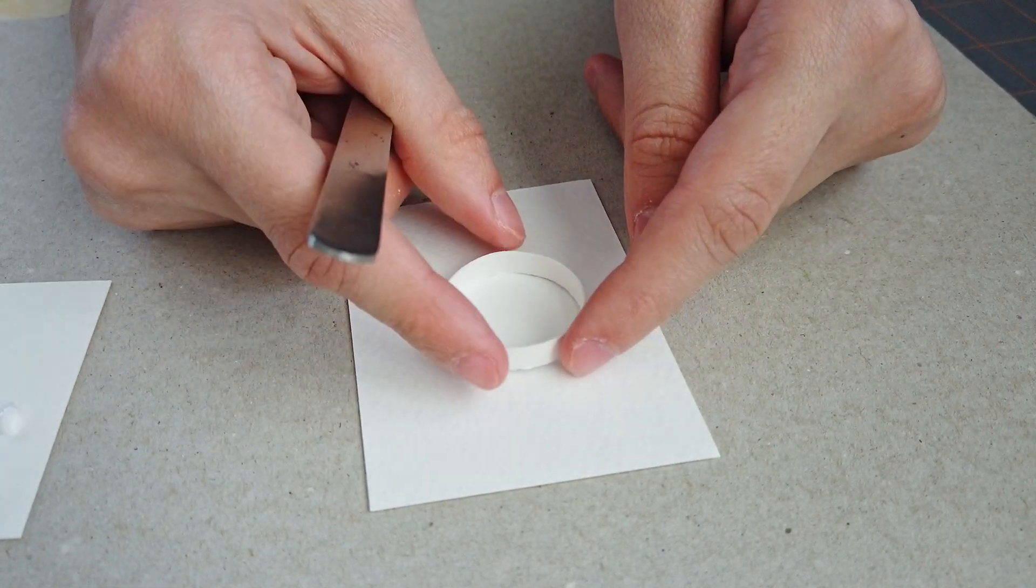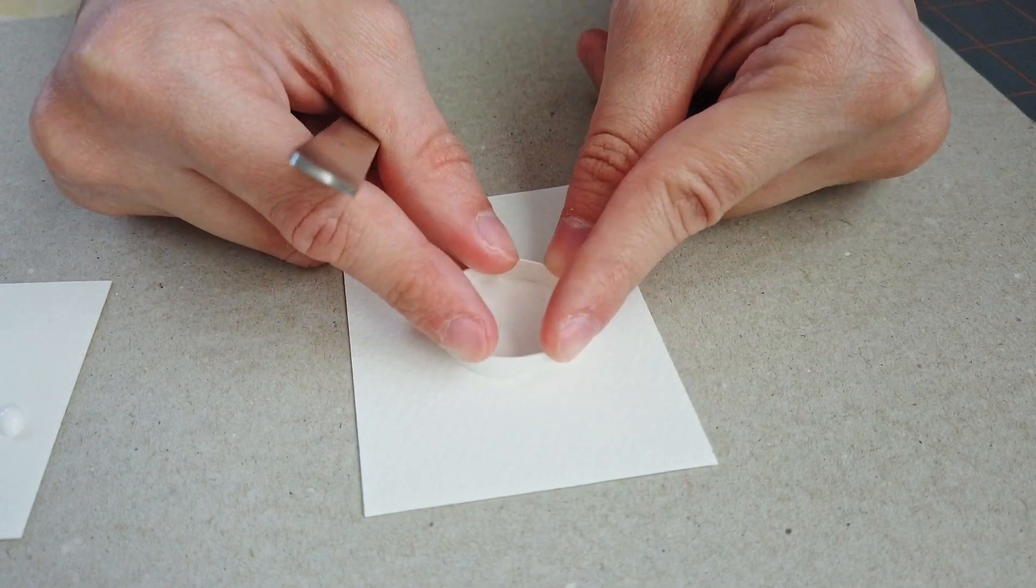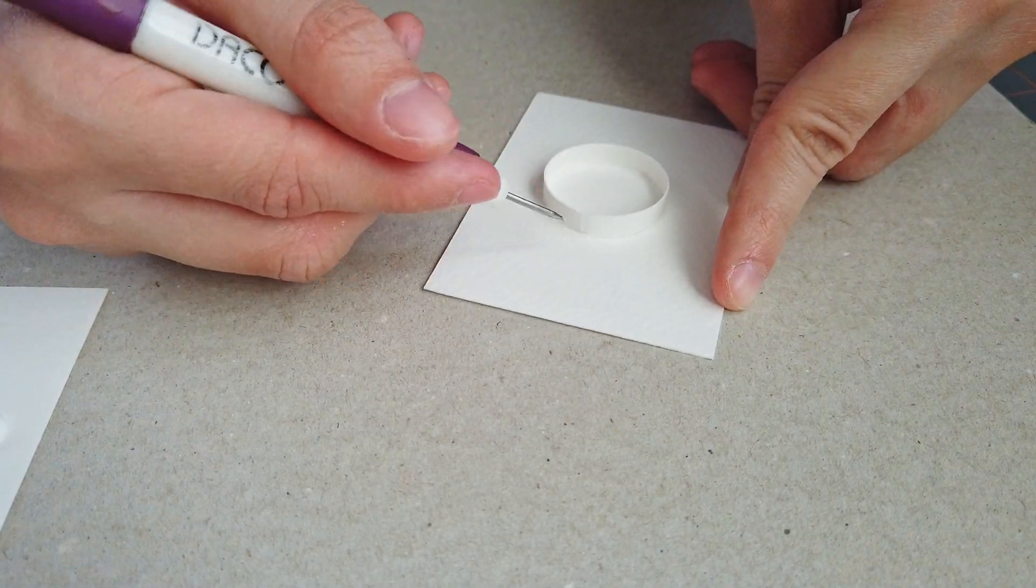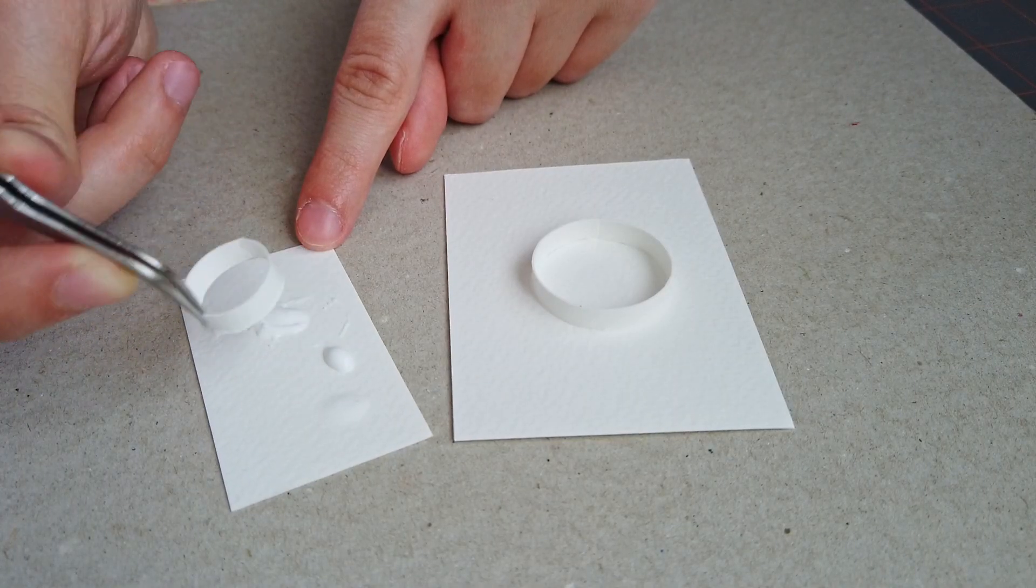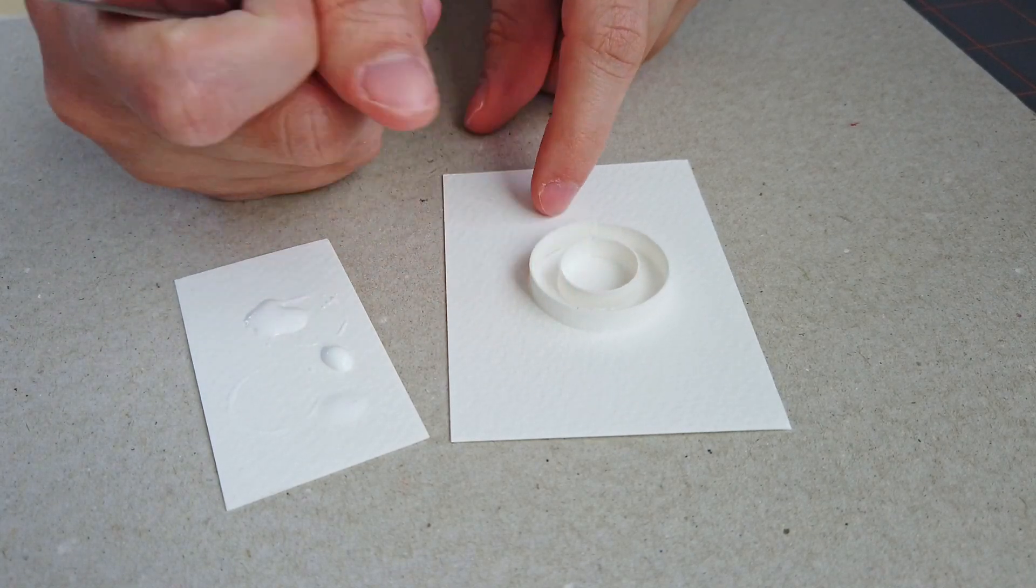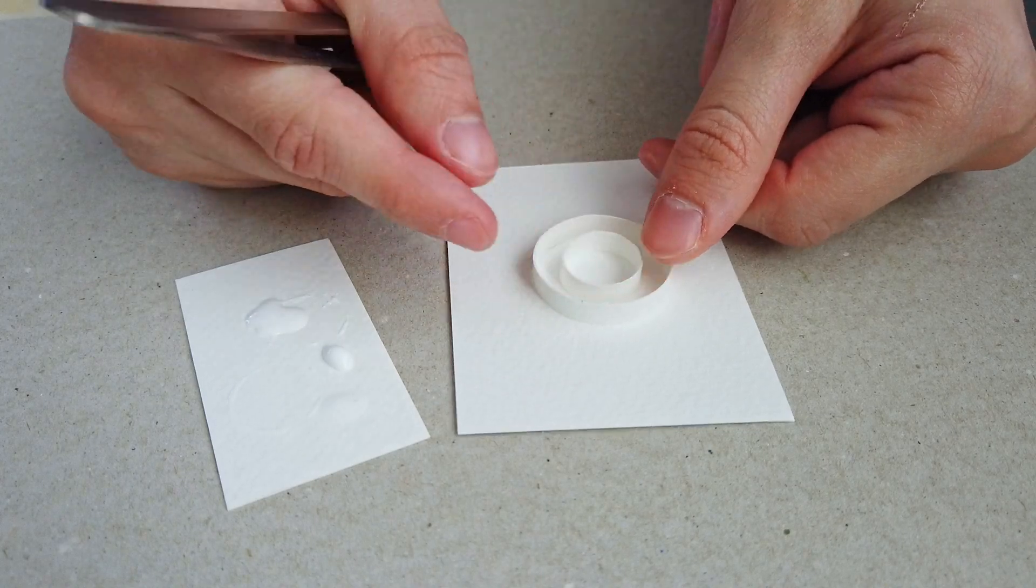Then I like to use my tweezers to help me glue it to my base card. And again, you can use the quilling needle to remove any excess glue. If you find that you used too much glue, you can also dab that quilling piece to a draft paper to remove the excess glue and then glue it to your base paper card.